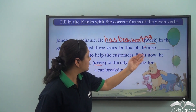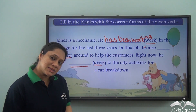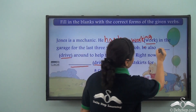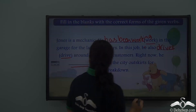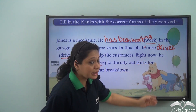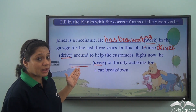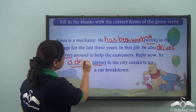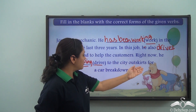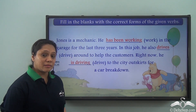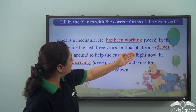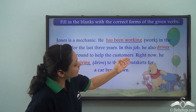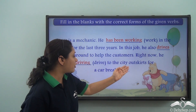"Right now he ___ (drive) to the city outskirts for a car breakdown" — this is showing an action in progress now, so it will be "is driving." The completed paragraph reads: Jones is a mechanic. He has been working in the garage for the last three years. In this job he also drives around to help the customers. Right now he is driving to the city outskirts for a car breakdown.